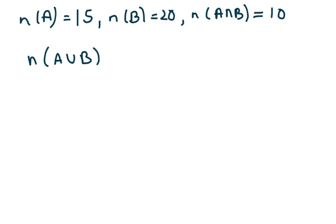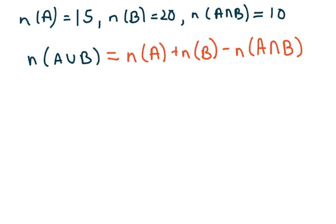So what we're going to do is write down the formula. This equals the number of elements in A plus the number of elements of B minus the number of elements that were in common to both. So we have 15 plus 20 minus 10, and that equals 25. It's pretty simple if you know your formula.